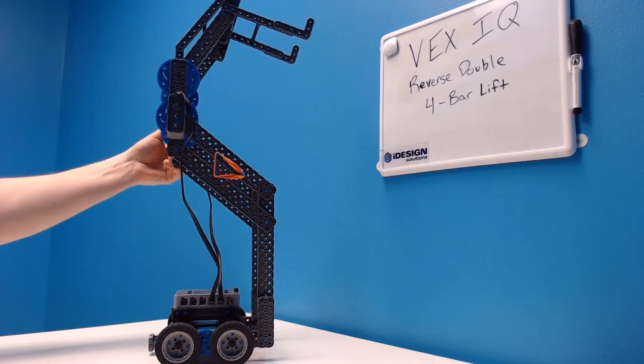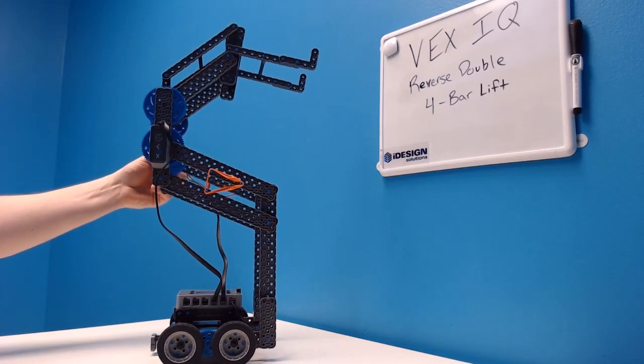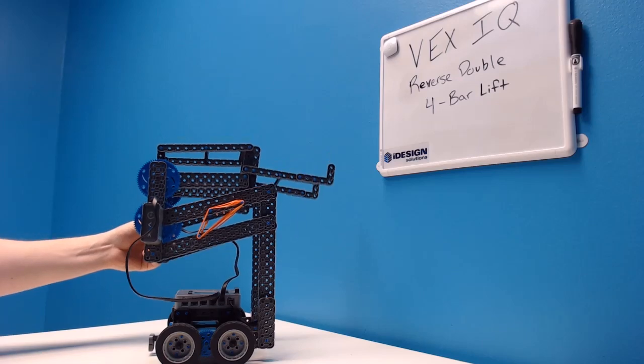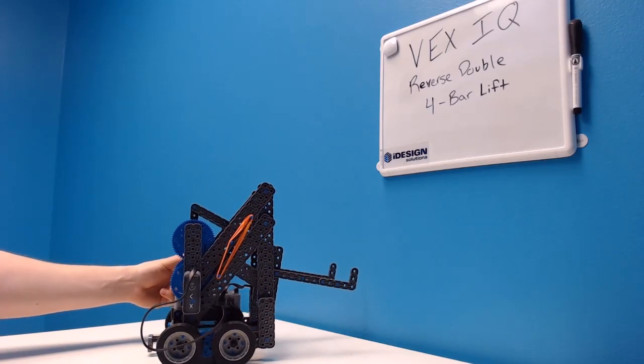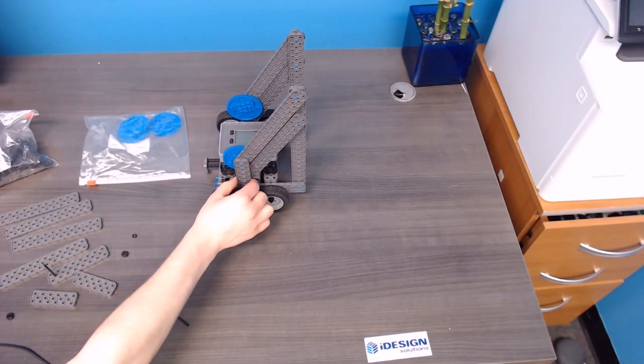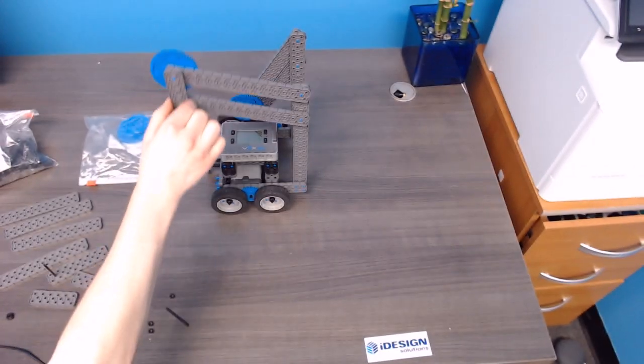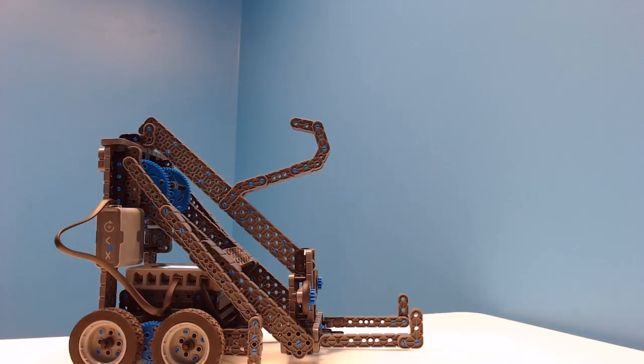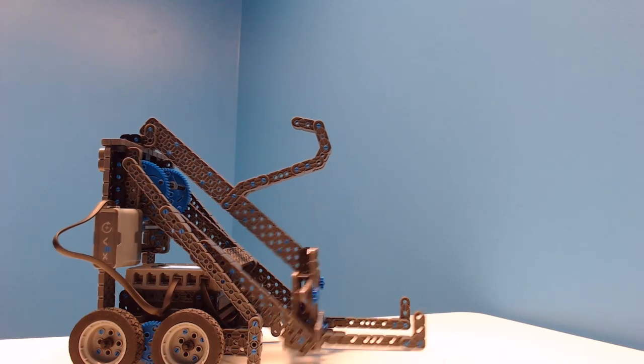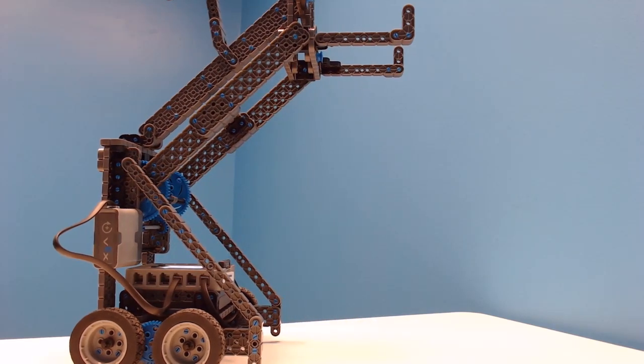Now people love the double reverse four bar because it's got a really high lift capacity but it also contracts to a really low robot. This is just a simple four bar, one half of the whole entire lift, and a good example of this is the current robot flex that VEX put out this year.